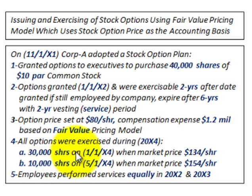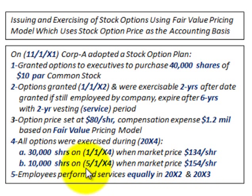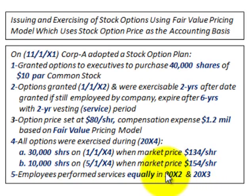30,000 shares were exercised on 1/1/X4 when the market price per share was $134, and the remaining 10,000 shares were exercised on 5/1/X4 when the market price per share was $154. The employees performed their services equally during the vesting period, 20X2 and 20X3.